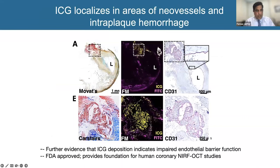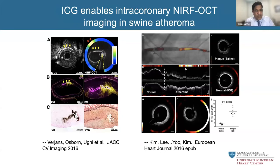So ICG needed to leak and then bind — it's really more than just a lipid or macrophage binder; it's really a function of endothelial barrier impairment. We found ICG co-localizing with fibrin in areas of intraplaque hemorrhage, and with CD31-positive neo-vessels with leaky vasculature. We've also shown that ICG can bind coronary atheroma in a pig model with diabetes, demonstrating ICG could leak into plaques there as well. ICG looks promising.